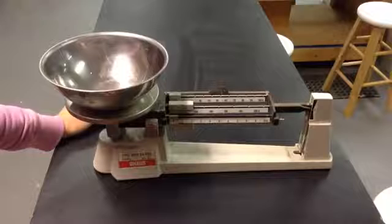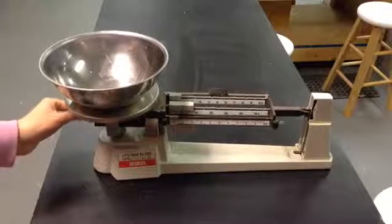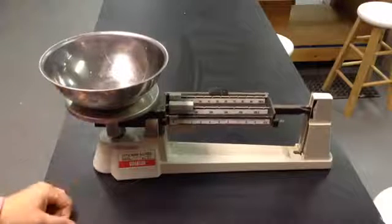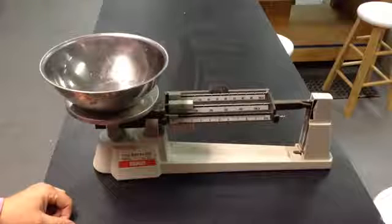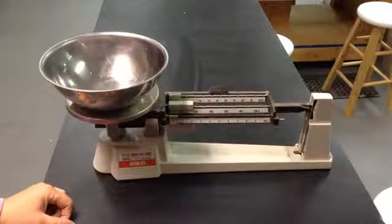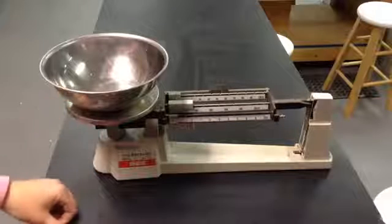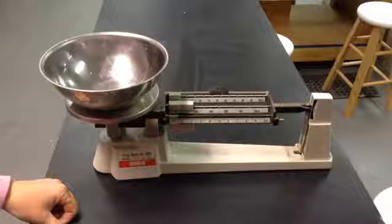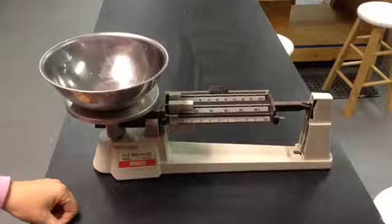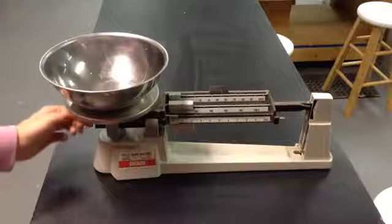When you begin to get close to the zero, you can use the fine-tuning adjustment knob beneath the pan to continue to get closer and closer to zero. Take your time and wait for the beam to stop moving in order to tell how close to zero you have gotten.